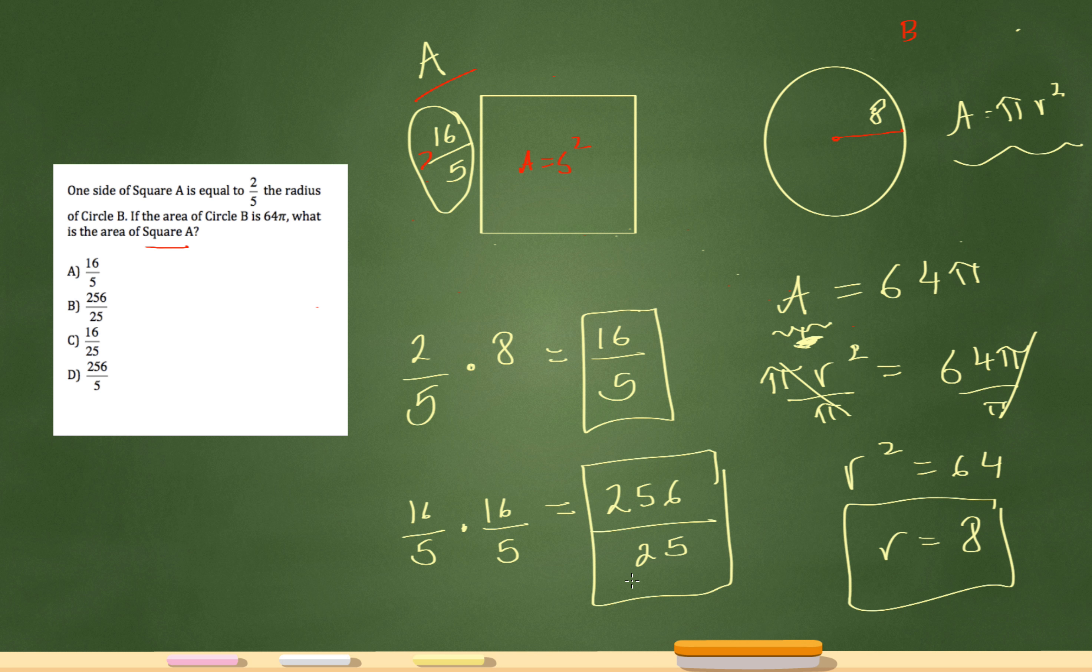So I did go through that a bit fast. Watch this video again if you need to. I'm just going to recap exactly what we did. First, I set the area of the circle equal to the area formula. So I set 64 pi equal to pi r squared. From there, I was able to figure out the radius of the circle. And the radius of the circle ends up being 8.